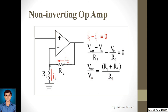Using the voltage divider rule, Vx = Vout × R1 / (R1 + R2). Since there is virtually no current through the op-amp between the two inputs, there can be virtually no potential difference between them. Thus for the ideal op-amp, Vx equals Vin. Therefore the voltage gain is Vout / Vin = (R1 + R2) / R1, which can also be written as 1 + R2/R1.